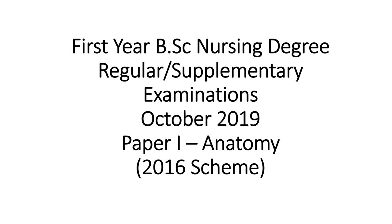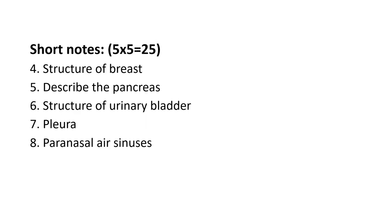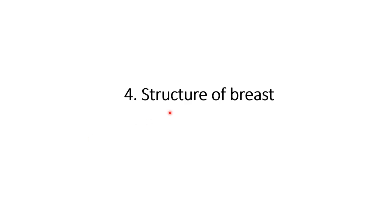Hello viewers, welcome to this video. We are seeing the question paper of anatomy asked by KUHS in October 2019. This section deals with Part C of the same question paper, and will cover the answer key of these short notes. The questions were: structure of breast, describe the pancreas, structure of urinary bladder, pleura, and paranasal air sinuses. The first question, question number 4, is a short note on the structure of breast.